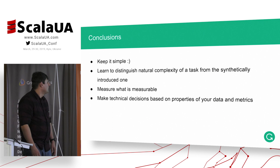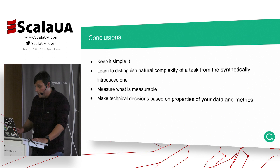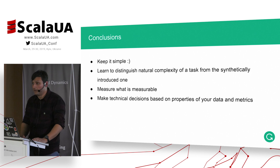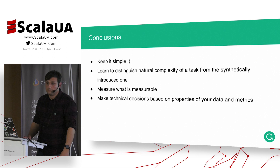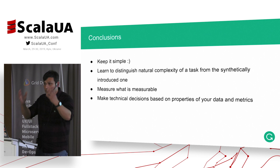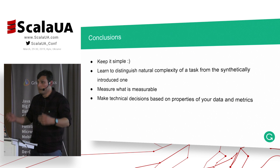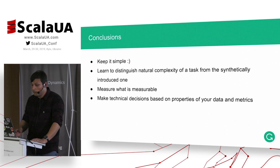Basically we come to some conclusions. The first one is: keep it simple. You don't need to introduce complexity where simple things work. Another important thing is to measure everything you can measure about your cluster. On EMR this is very convenient with Ganglia metrics — it has an ugly interface, but it works. It shows you the distribution of load among cluster nodes and a lot of other useful information. Make technical decisions based on properties of your data and collected metrics.